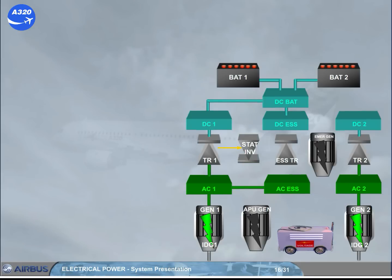Finally, a static inverter allows part of the AC electrical network to be supplied from battery 1 when only batteries are connected. On ground, it supplies an AC static inverter bus, and battery 2 will supply partially the DC essential bus.